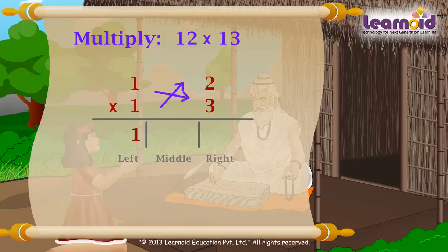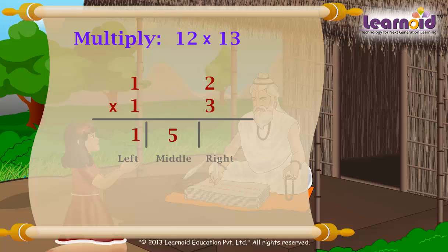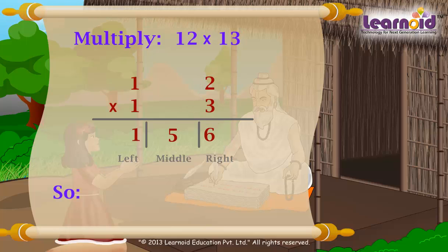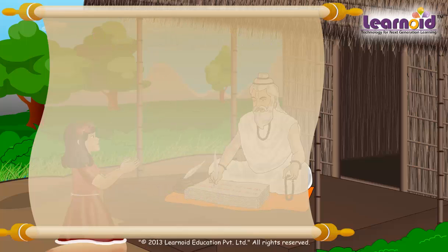Now multiply crosswise and add: 1 into 3 equals 3, plus 2 equals 5. This forms the middle part of the answer. For the right part, again multiply vertically: 2 into 3 equals 6. So the answer is 12 into 13 equals 156. Let's take one more example to understand it better.